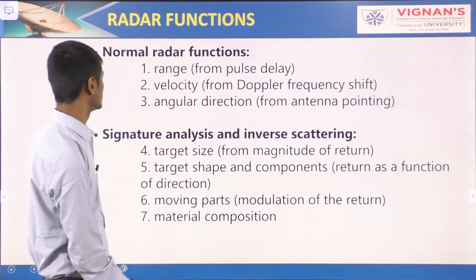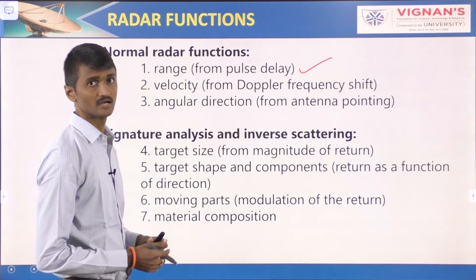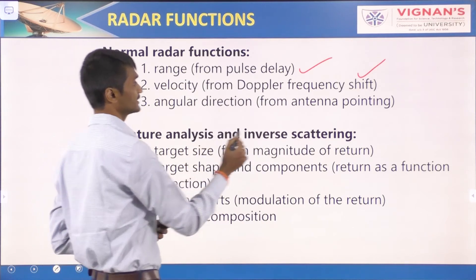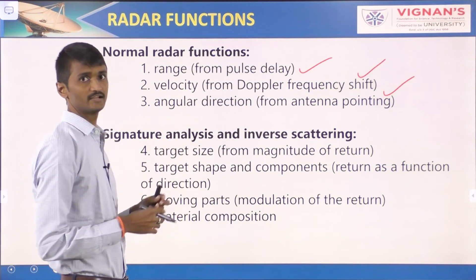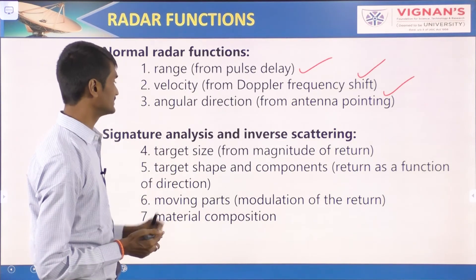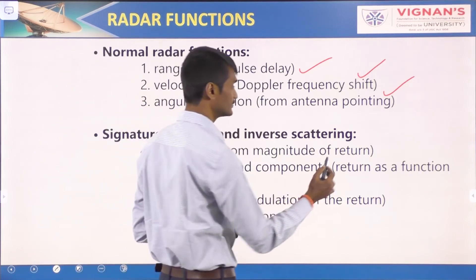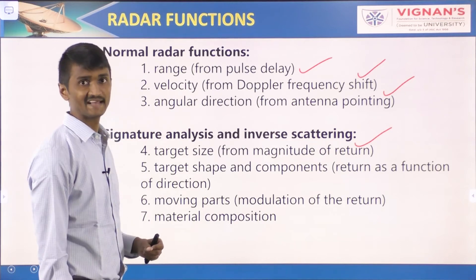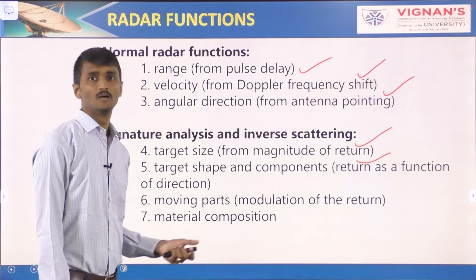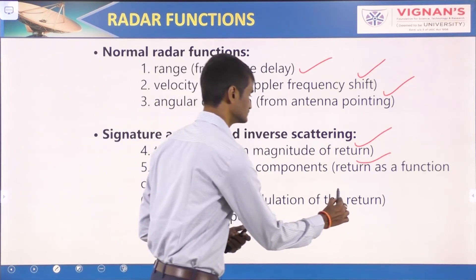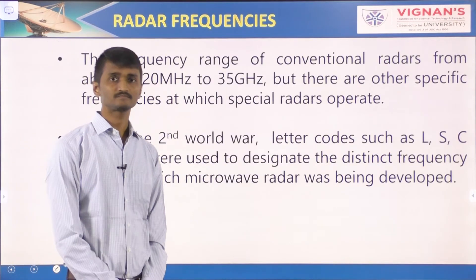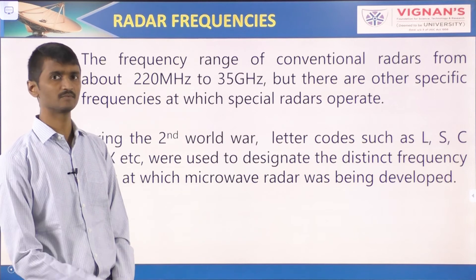Radar functions: range is found using pulsed delay or pulsed radar; velocity is measured from the Doppler frequency shift in CW radar; angular direction is determined from the antenna pointing direction. From signature analysis and inverse scattering, radar can also find target size from the magnitude of the return signal, target shape and components based on returns as a function of direction, moving parts based on modulation of the return signal, and material composition.